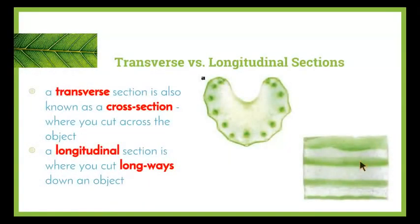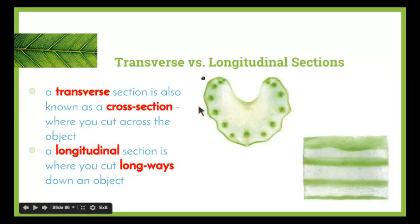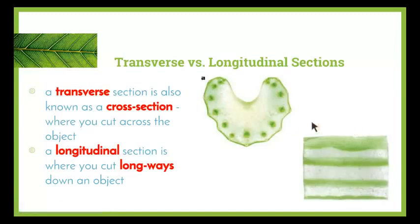We also need to be able to create diagrams of transverse and longitudinal sections of the celery. A transverse section — also known as a cross-section — is where we cut across the object, while a longitudinal section is where you cut lengthways down an object. When we do our investigation, we'll be creating both transverse and longitudinal sections of the celery and drawing and labelling the diagrams.